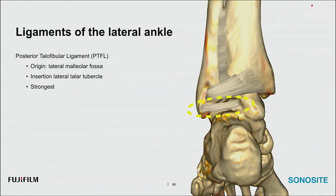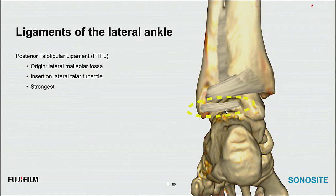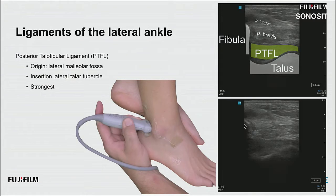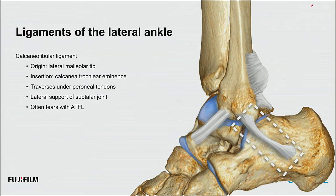The PTFL's origin is the lateral malleolar fossa; insertion is the lateral talar tubercle. It is the strongest of these lateral ligaments. It's relatively horizontal and slightly oblique, harder to visualize—it appears as a prominent shadow underneath the fibula attaching to the talus. Windshield wiper the Achilles-side of the probe to catch all its insertions. The calcaneofibular ligament originates at the lateral malleolar tip, inserts at the calcaneal trochlear eminence, traverses under the peroneal tendons, and provides lateral subtalar joint support.